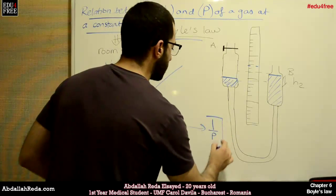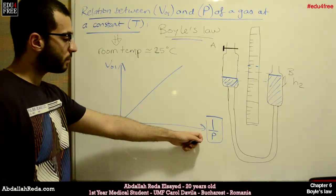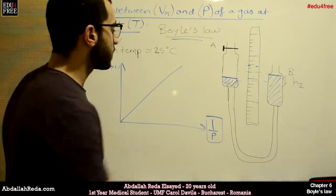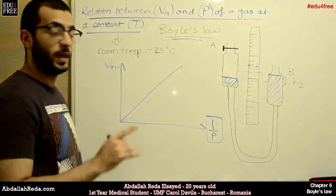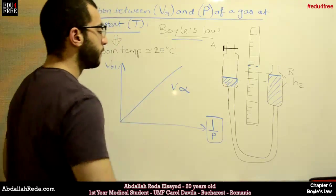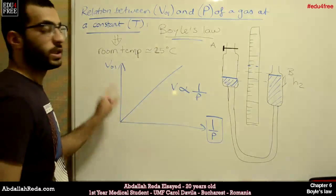We have to take care while we're writing the graph, or drawing the graph, that on the x-axis we have 1 over P, not P. Because the law says that V is inversely proportional with P. So this is the relationship.